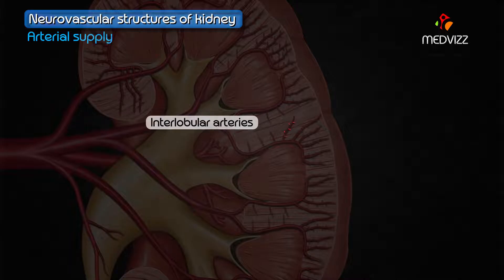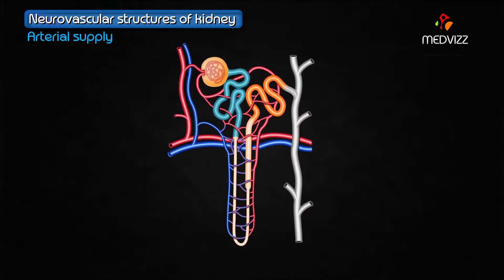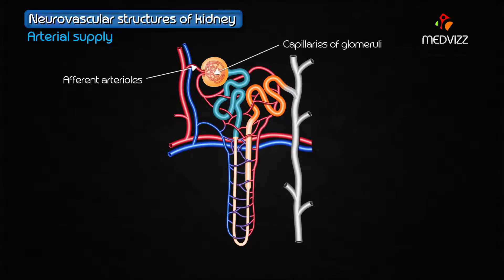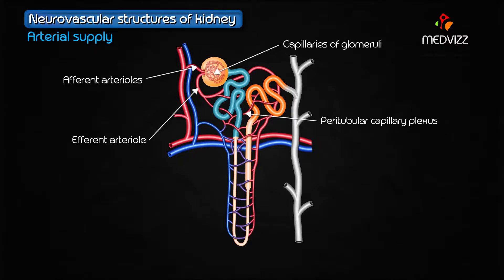The interlobular arteries give rise to afferent arterioles, which pass to the capillaries of the glomeruli, then reunite to form efferent arterioles. The efferent arterioles then divide to form the peritubular capillary plexus around the convoluted tubules.